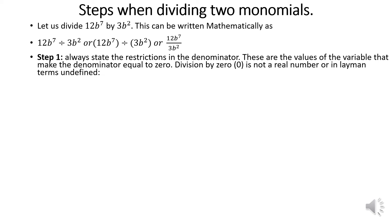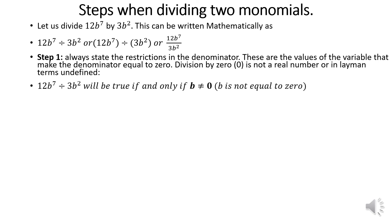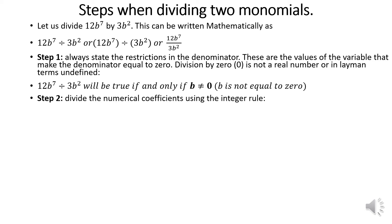The value which makes the denominator equal to 0 is a restriction — it cannot equal that particular value, because division by 0 is undefined. So 12b⁷ ÷ 3b² holds true if and only if b ≠ 0, because once b becomes 0, we are dividing by 0. Step number 2: divide the numerical coefficients using the integer rule — 12 divided by 3 gives you 4.